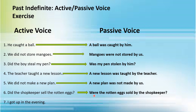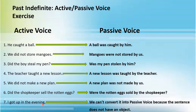Our last sentence is: 'I got up in the evening.' Here 'I' is the subject, 'got up' is the verb, and 'in the evening' is not the object. So we cannot convert it into passive voice because the sentence does not have any object.